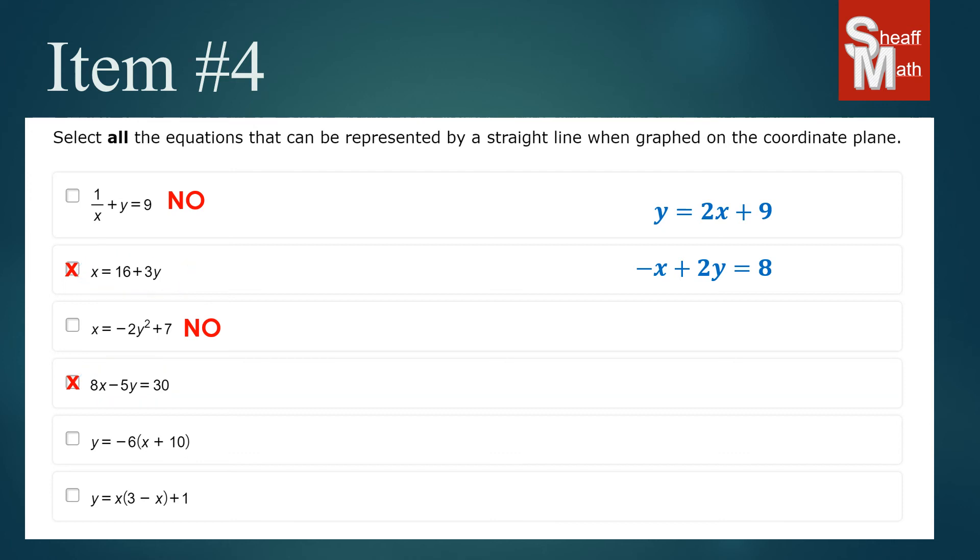Now the reason I didn't jump straight to five and six is because they can be simplified and we're not sure yet if they are equations. So we're going to have to get rid of those parentheses. We're going to distribute the numbers out front. So we're going to distribute the negative six to the x and the 10. And this is what we get: y equals negative 6x minus 60. And so this is clearly a linear equation in the slope intercept form. So that is a definite yes.